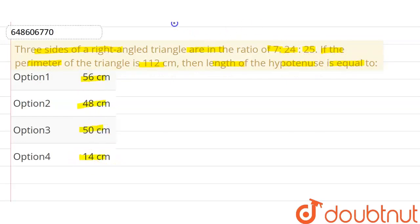Here you can see right angle triangle, the ratio of sides of triangle is equal to 7:24:25. The perimeter is 112 cm.